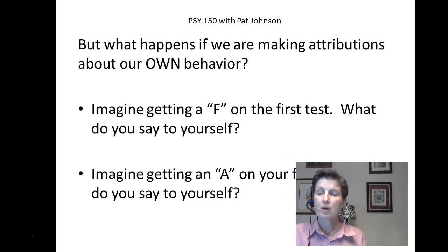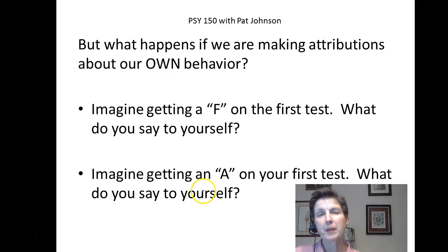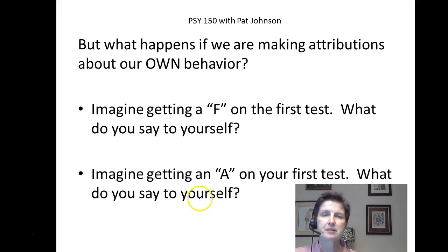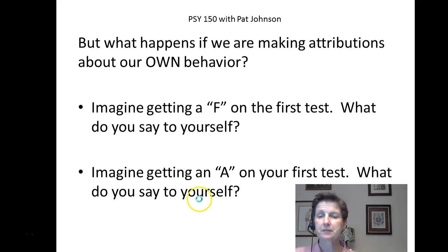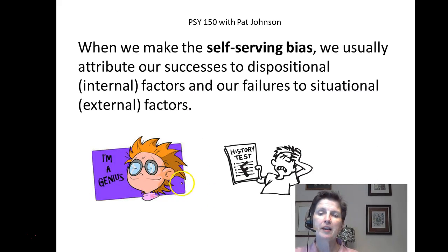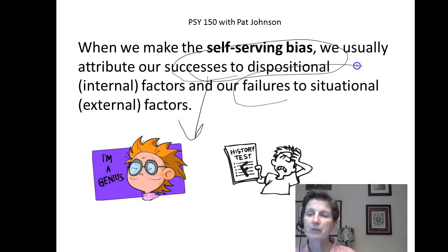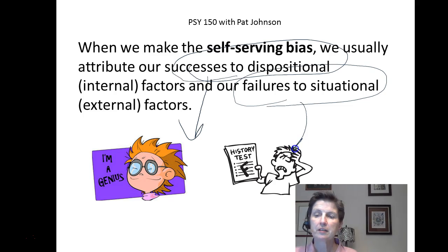What happens when we're making attributions about our own behavior? Imagine you're getting back your first test in this class and that first grade is an F. What do you say to yourself? On the other hand, imagine getting your first test back with a big red A — maybe even an A+. What do you say to yourself? When we make the self-serving bias, we usually attribute our successes to dispositional factors and say something like, "I'm a genius" or "I'm smart." But when we fail, we usually blame the situation.